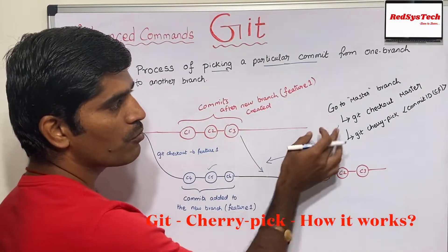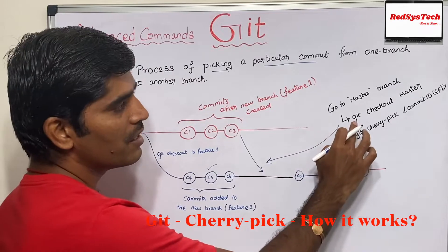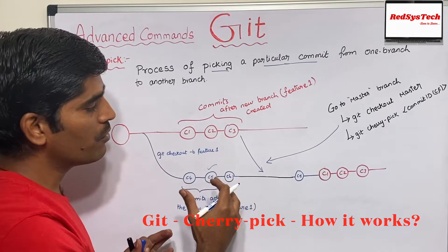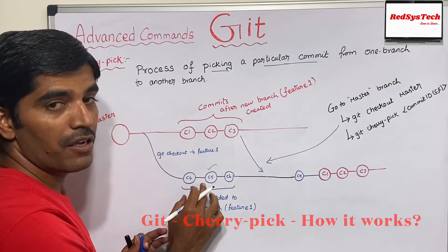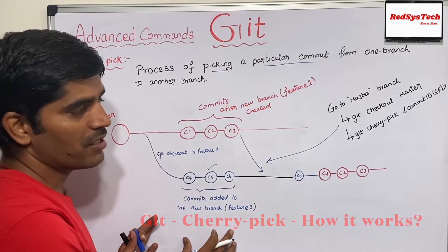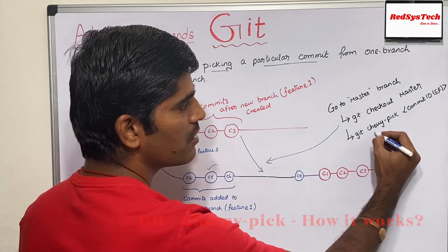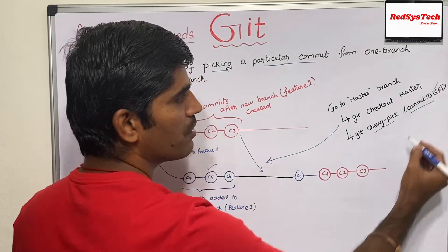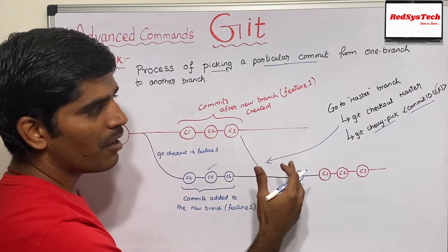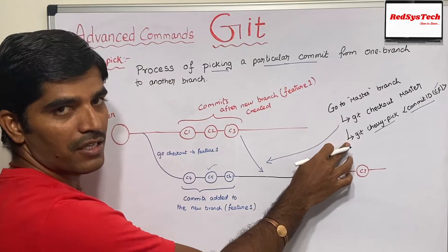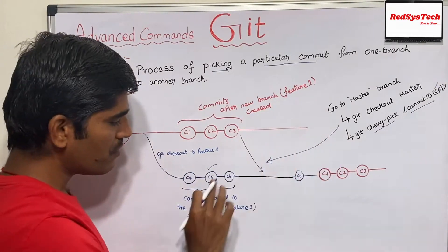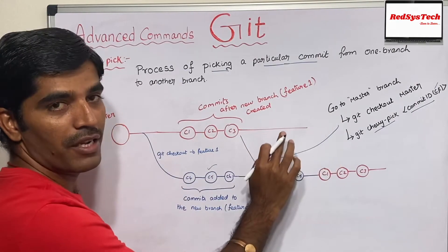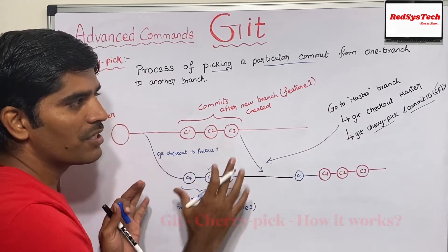First of all, you have to go to master branch using the command git checkout master, which means you are switched into master branch. From the master branch, if you want to get this particular C5, which is in the Feature 1 branch, you have to give the command git cherry-pick followed by the commit ID. What will happen is wherever you currently are — the master branch or the current branch — that commit ID will be applied to the current branch, which is the master branch. This is how cherry pick works.